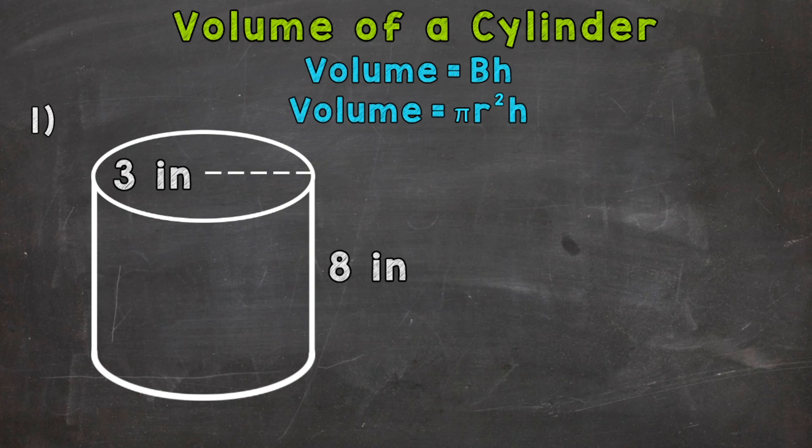And remember, volume is the amount of space a three-dimensional object takes up. So let's get into our example here where we have a cylinder with a given height of 8 inches and our base has a given radius of 3 inches. So that's the information we need in order to calculate volume of a cylinder.